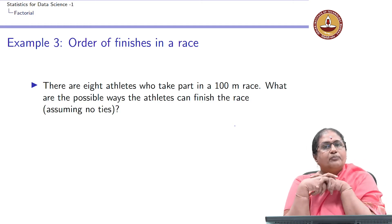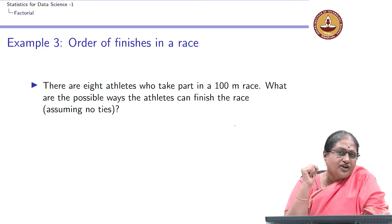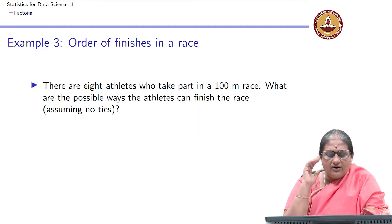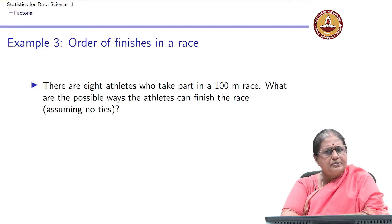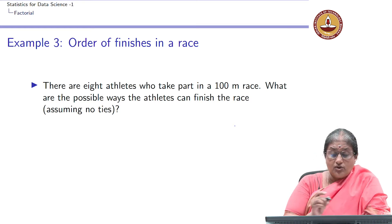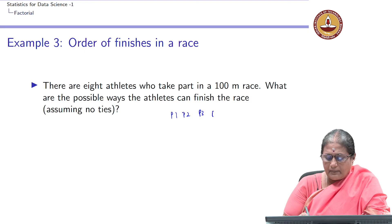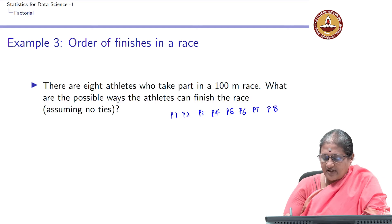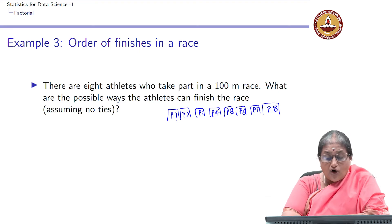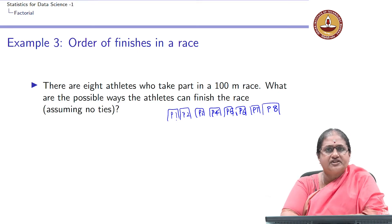Now let us introduce a very important concept referred to as factorial notation or a factorial. Let us look at a race — it is a 100-meter race and I have 8 people running in this race. They are distinct people: person 1, person 2, person 3, person 4, person 5, person 6, person 7, and person 8. They are all distinct people running this race. What are the possible ways these athletes can finish the race?